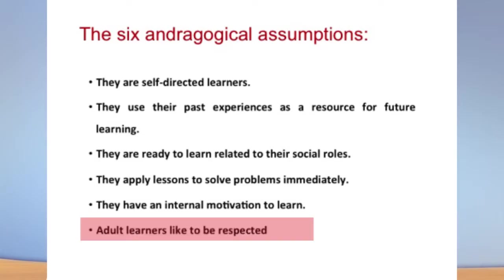Adult learners like to be respected — as already explained. Now, certain factors and sources give motivation to adult learners. As established, the adult learner gets motivation internally. So what are the factors that provide this internal motivation? Six factors are identified: social relationship, external expectation, social welfare, personal advancement, stimulation, and cognitive interest.